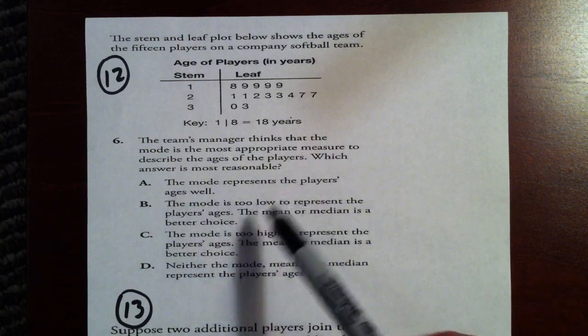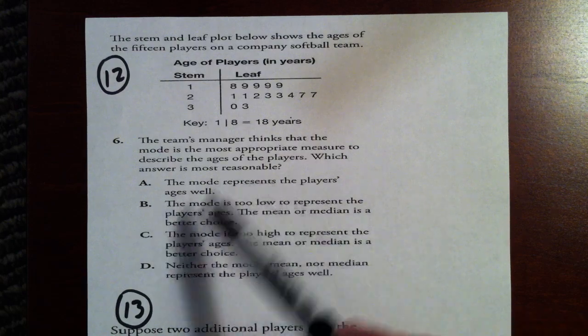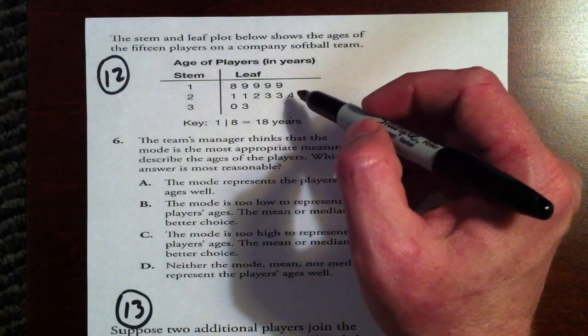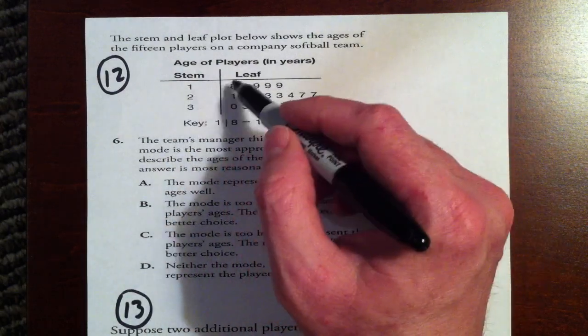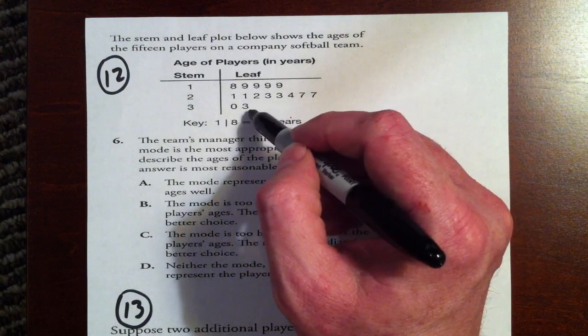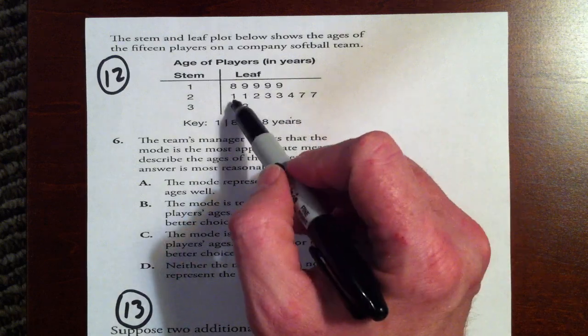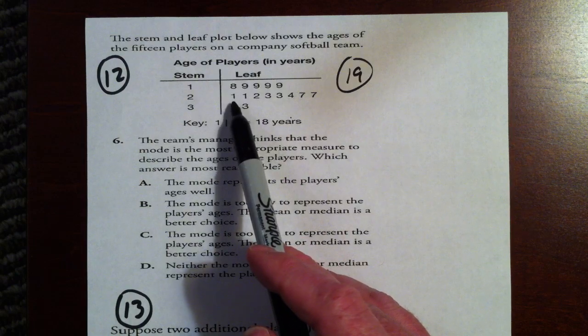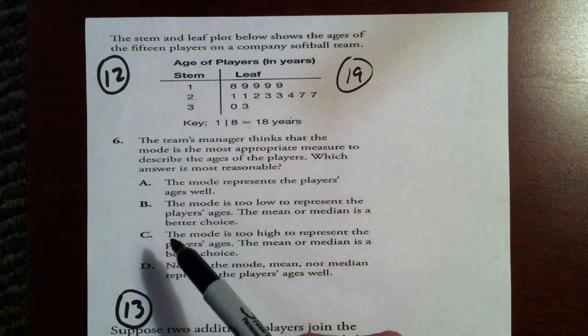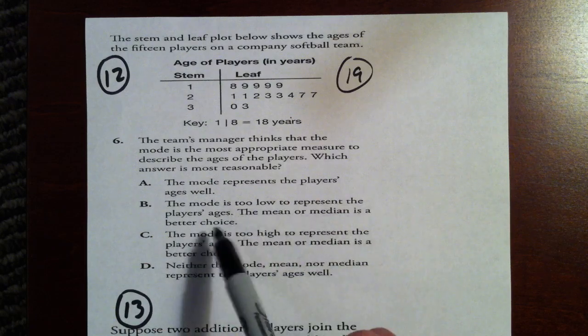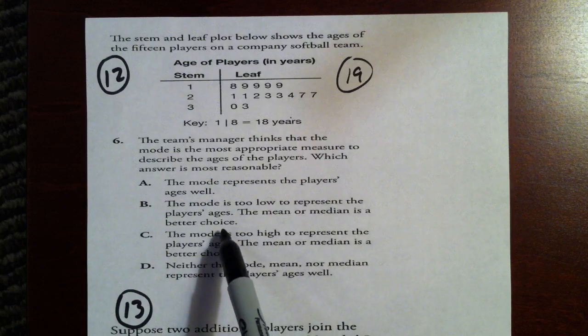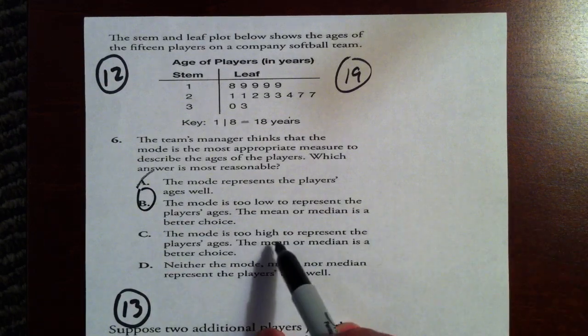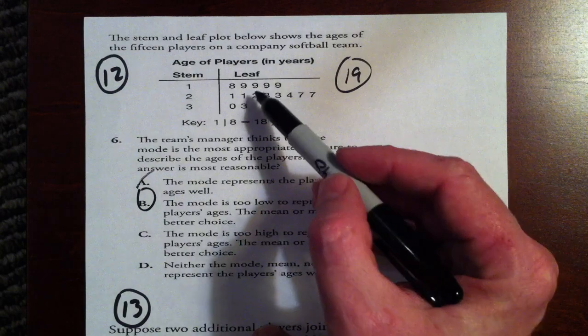Which answer is most reasonable? And in this case, we might have to do a little figuring for all these. The mode represents the player's age as well. Well, maybe not, because you've got a wide range of ages, all the way from 18, which is pretty close to 19, all the way down to 33. Well, you've got a bunch of different ages in here. And I don't think 19 really represents them well, because you've got a bunch at 19, but you've also got a bunch at 21, 22, 23, 24, and 27. The mode is too low to represent the player's ages. The mean or the median is the best choice. Well, this might be a viable option. The mean or the median might be the best way to represent it. The mode is too high. Well, the mode is obviously not too high, because it's one of the lowest ages. We can get rid of that.